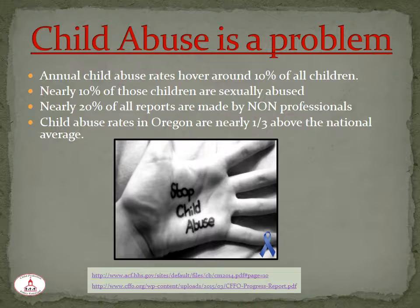We can all agree that child abuse is a problem and that we must work together to prevent it. It's helpful to know a bit about how great a problem it is. According to U.S. Health and Human Services data, there were over 700,000 victims of child abuse in the United States in 2014. That figure includes 1,580 fatalities. The annual rate hovers near 10% of all children in the nation.